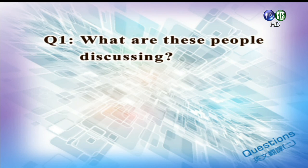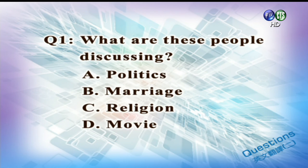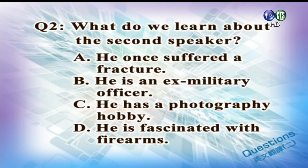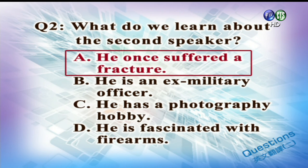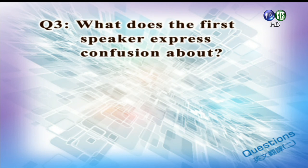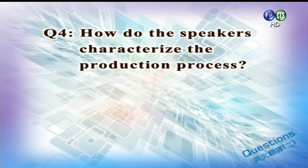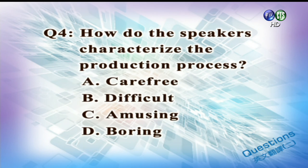接着我们从刚才的英文会话里面挑些 questions 来问同学。Question 1: What are these people discussing? A. Politics, B. Marriage, C. Religion, D. Movie. 答案是 D. Movie。Question 2: What do we learn about the second speaker? A. He once suffered a fracture, B. He is an ex-military officer, C. He has a photography hobby, D. He is fascinated with firearms. 答案是 A. He once suffered a fracture。Question 3: What does the first speaker express confusion about? A. The man's memory lapse, B. Her own political beliefs, C. A star's life dates, D. A script's abrupt changes. 答案是 C. A star's life dates。Question 4: How do the speakers characterize the production process? A. Carefree, B. Difficult, C. Amusing, D. Boring. 答案是 B. Difficult。